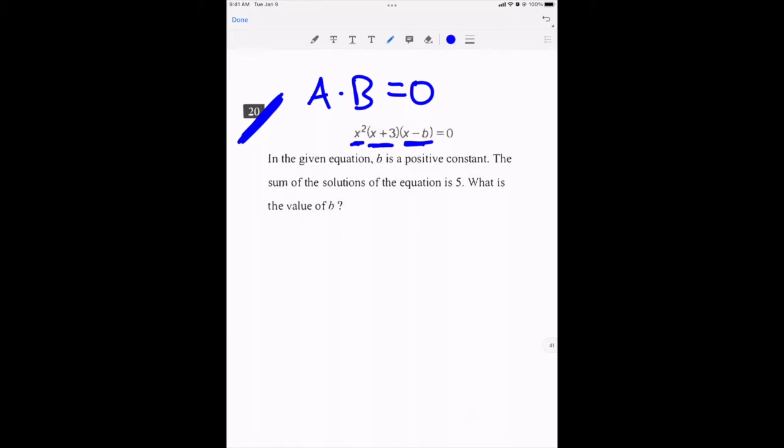Well, that means either x squared has to equal zero, or x plus three has to equal zero, or x minus B has to equal zero. At least one of those things has to be true, and in this case...